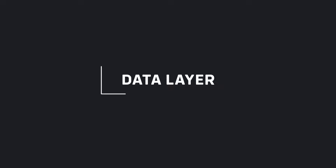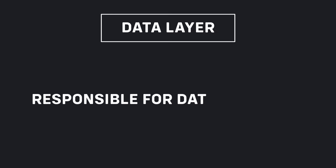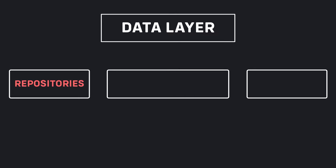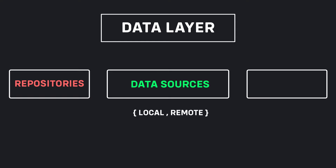Data layer. The data module, which is part of the outermost layer, is responsible for data retrieval. This can be in the form of API calls to a server or a local database. It also contains repository implementations. This layer has three parts: the repository part, which includes actual implementations of the repositories in the domain layer; the data source, which consists of remote and local data sources — remote data source will perform HTTP requests on the API while local data source will cache or persist data; and finally models, which represent the JSON structure and allow us to interact with our data sources.